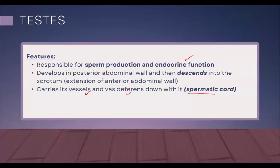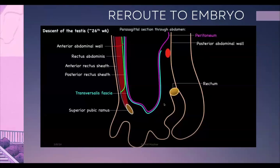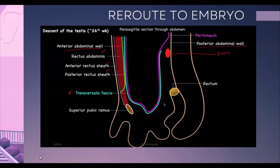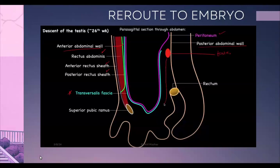For this we have to come back to embryology. Around week 26, the testes start to descend downwards to the scrotum. Here are our testes, with the posterior abdominal wall behind and the anterior abdominal wall in front. The layers are: anterior rectus sheath, rectus abdominis, posterior rectus sheath, then very importantly transversalis fascia first, and then the peritoneum second. The testes descend from this position and essentially have to reach the scrotum.